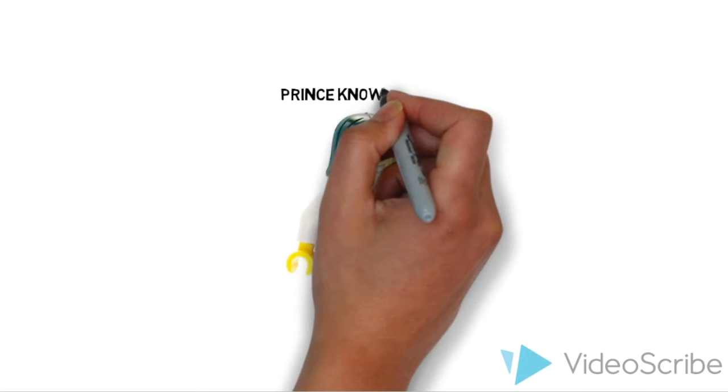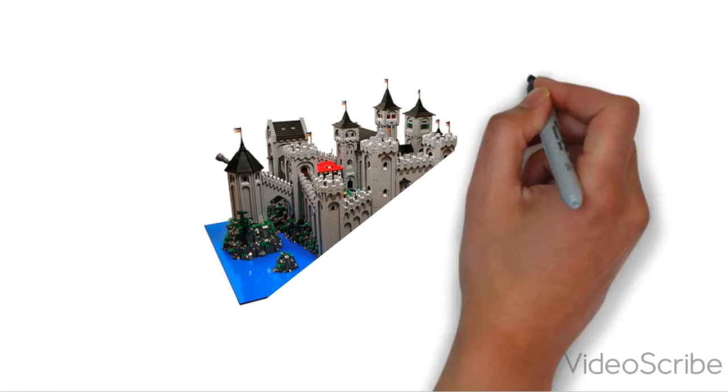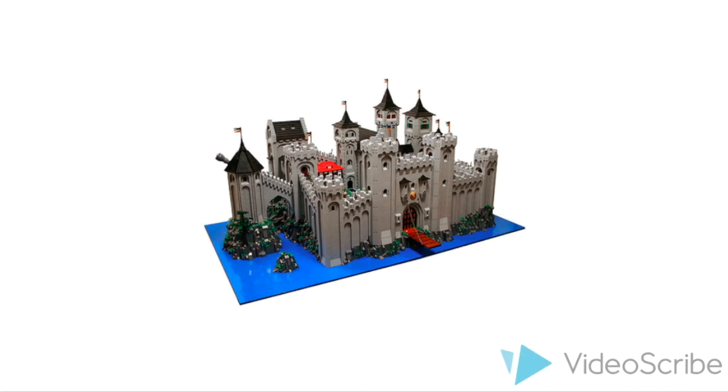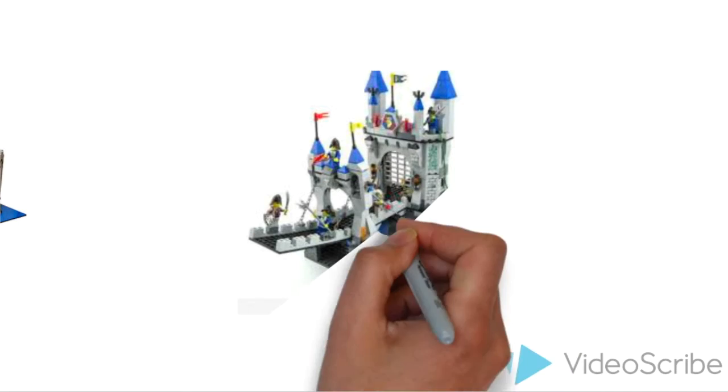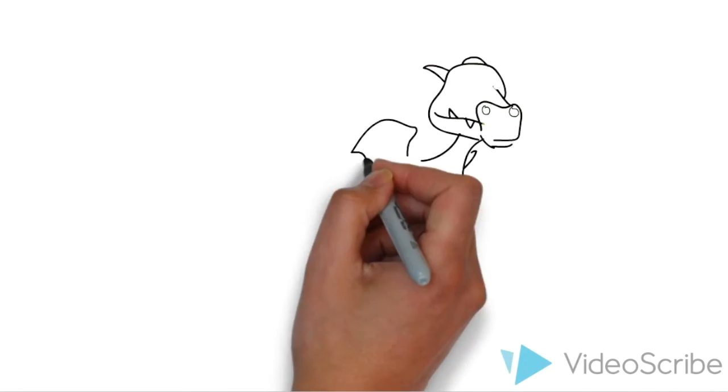You, prince knows a lot, are approaching the castle when your horse anxiously neighs. You then notice there is an enormous moat surrounding the castle. There are four bridges crossing the moat, making it look like a bicycle tire from a bird's eye view, and at the end of each bridge there is a gate.